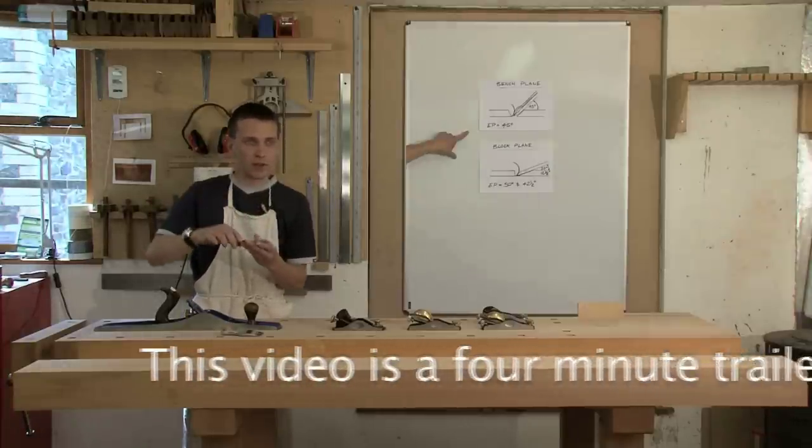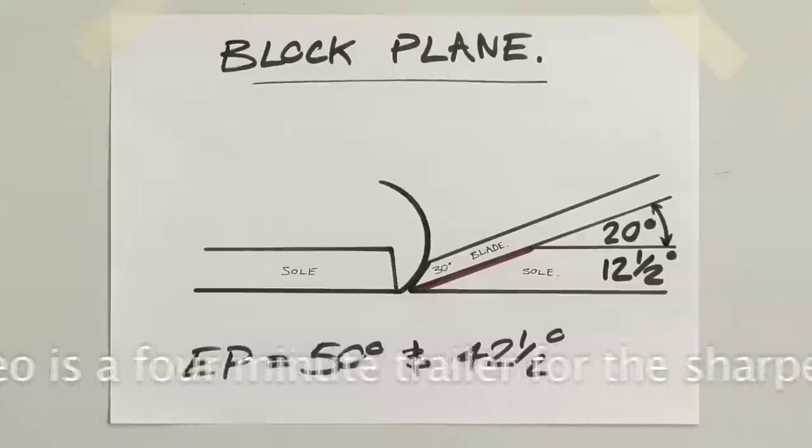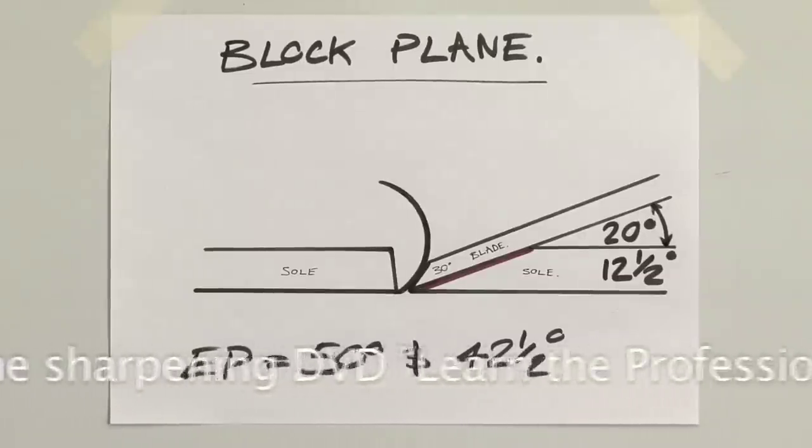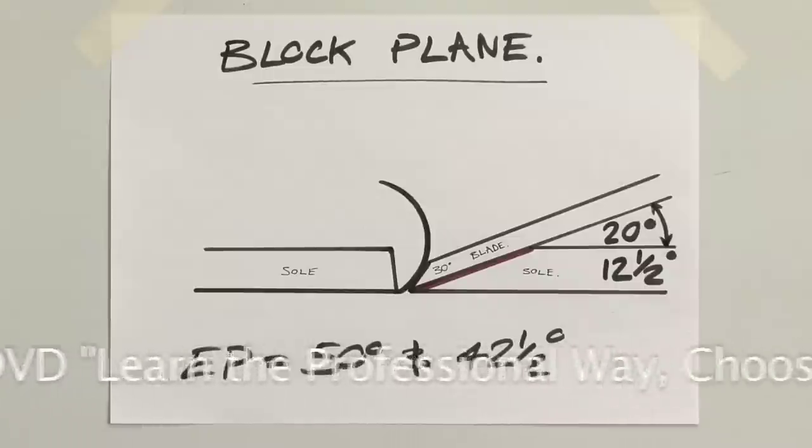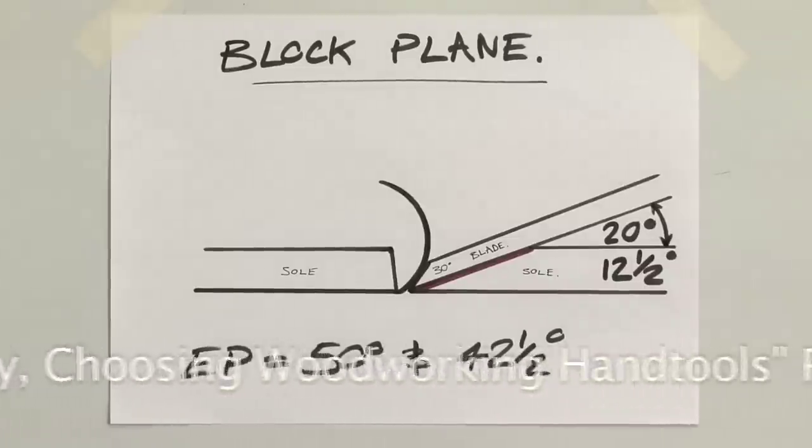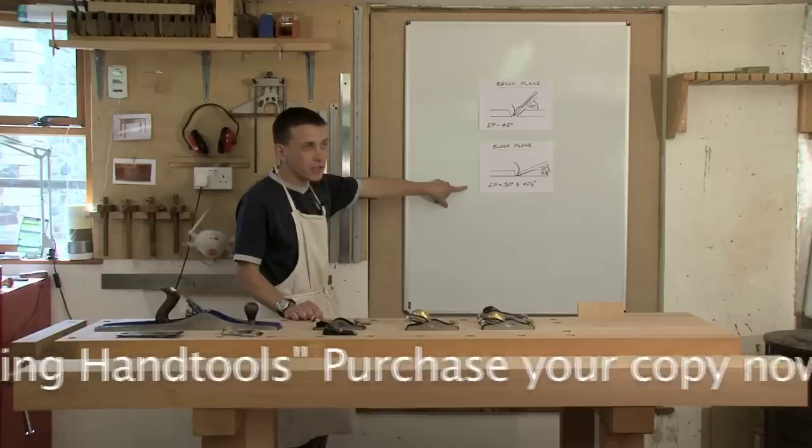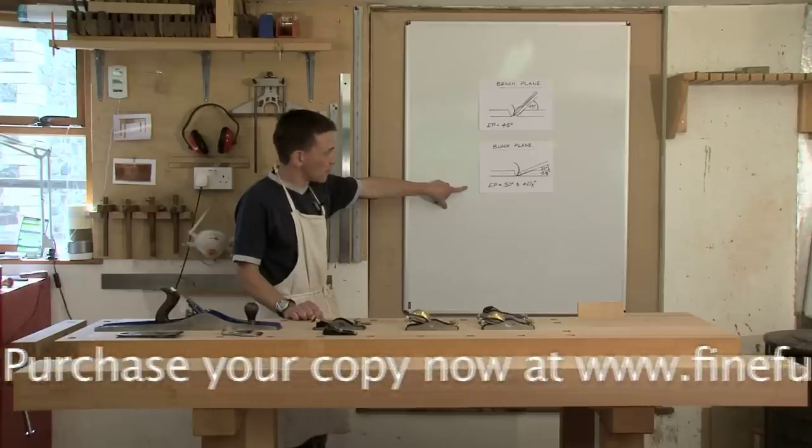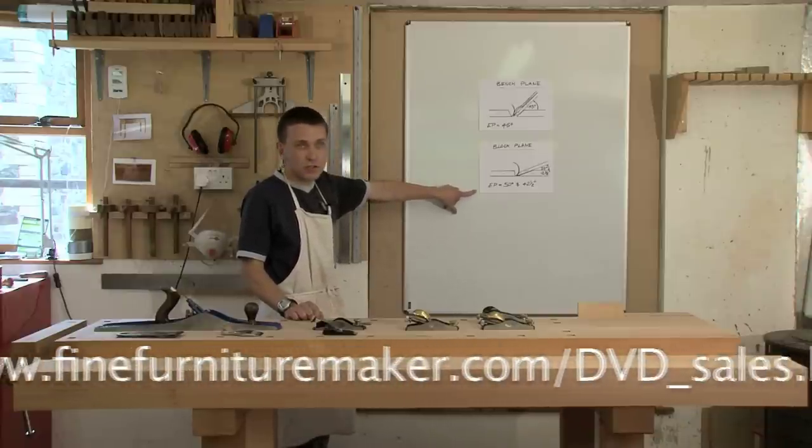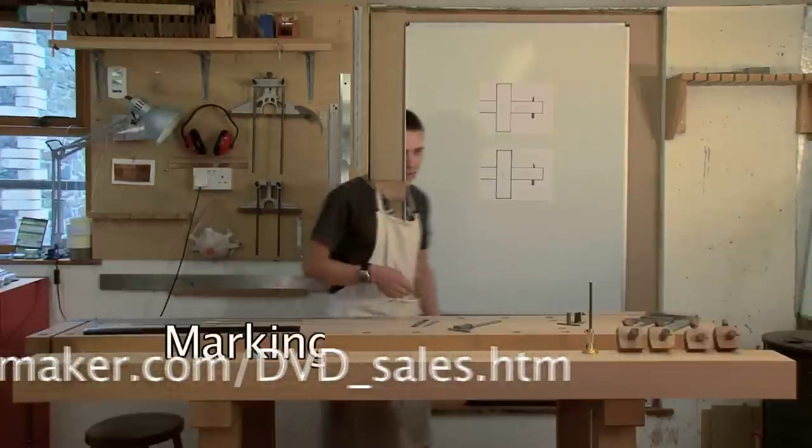If you move to a block plane, you've got a seating angle of 20 degrees in a standard and 12 and a half in a low angle. And if you consider that the bevel is up and our honed edge is at 30 degrees, that gives us an effective pitch of 50 degrees and 42 and a half degrees.